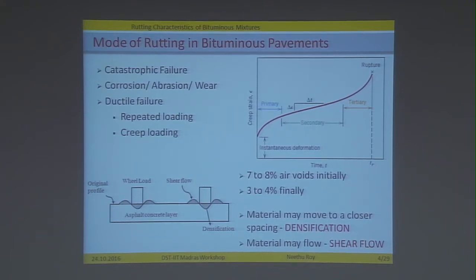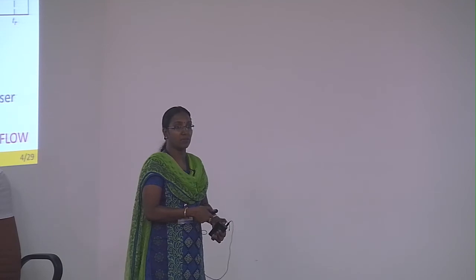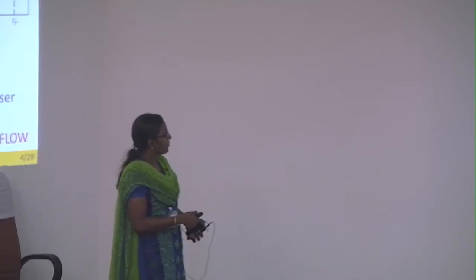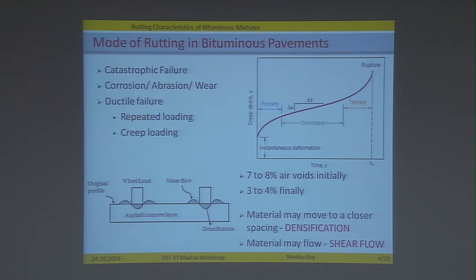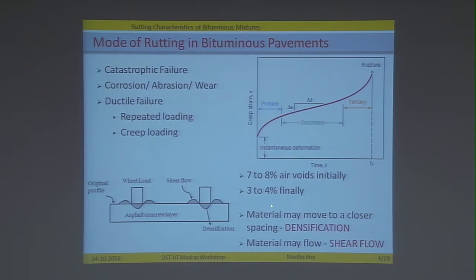In this study what we are discussing is the deformations we see in the bituminous concrete layer, not what happens in the pavement structure as a whole or in the subgrade layer. The asphalt concrete layer is designed to have 7 to 8 percent air voids initially. Due to traffic and repeated wheel loads it will eventually densify to 3 to 4 percent air voids, and at the same time you see a shear flow of material from the wheel path. So the rutting I see is a combination of densification and shear flow.